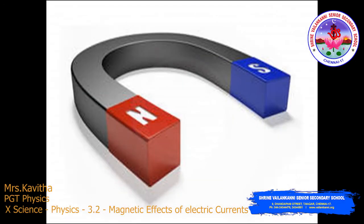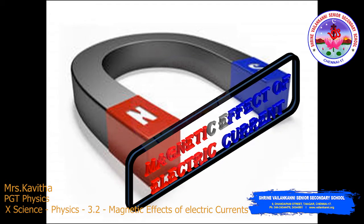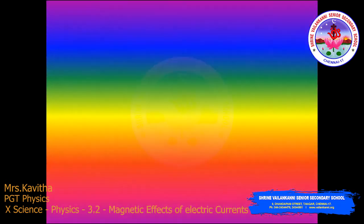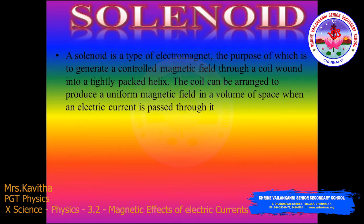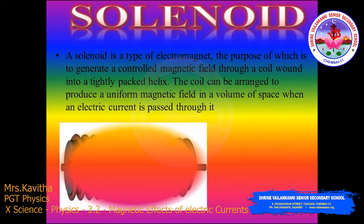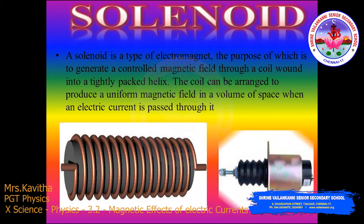Hello children, welcome to our class on the continuation of magnetic effects of electric current in the solenoid. A solenoid is a type of electromagnet, the purpose of which is to generate a controlled magnetic field through a coil wound in a tightly packed helix.